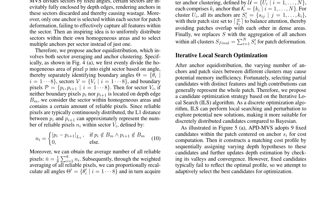The resulting anchor clusters are used for patch deformation, with each cluster comprising multiple anchors and their patch sizes set to balance attention. To address potential memory inefficiency due to varying anchor numbers and patch sizes, the authors propose an iterative local search optimization strategy. This involves selecting partial candidates with distinct features and high contributions using the ILS algorithm, which can perform local searching and perturbation to explore potential new solutions. The optimization strategy adaptively selects the best candidates, replacing the fixed candidates used in APD-MVS, ensuring efficient utilization of resources while maintaining accuracy and reliability of MVS reconstruction.